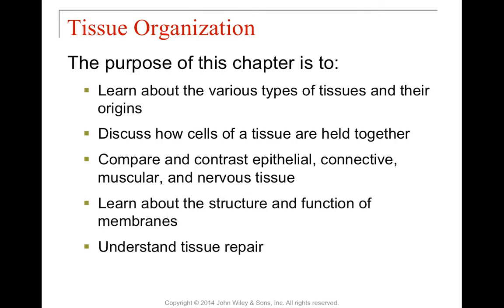Well, aloha everyone, and welcome to our lecture on Tissue Organization for Anatomy and Physiology I here at Chaminade University. The overview of this chapter is that we're going to talk about the different types of tissue and their origins. We'll talk about how tissues are held together — how the cells are actually connected to other cells — and then we'll discuss epithelial tissue, connective tissue, muscular tissue, and nervous tissue, and compare and contrast them.